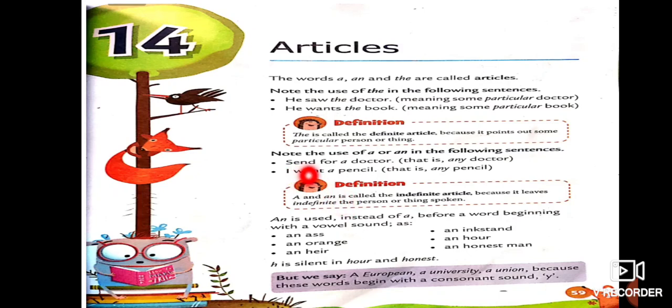See here. Send for a doctor. So, here, name of any doctor. You can send any doctor. So, here, article A is used. You can see here, before the name of doctor, we can say that it's a consonant sound. D. So, D is consonant sound. So, here, you will use article A. Next sentence. I want a pencil. So, before this word, pencil, we are using article A. Why? Because, here, it is talk about any pencil. And, this word, first letter is consonant. Consonant sound here. So, we will use here article A.